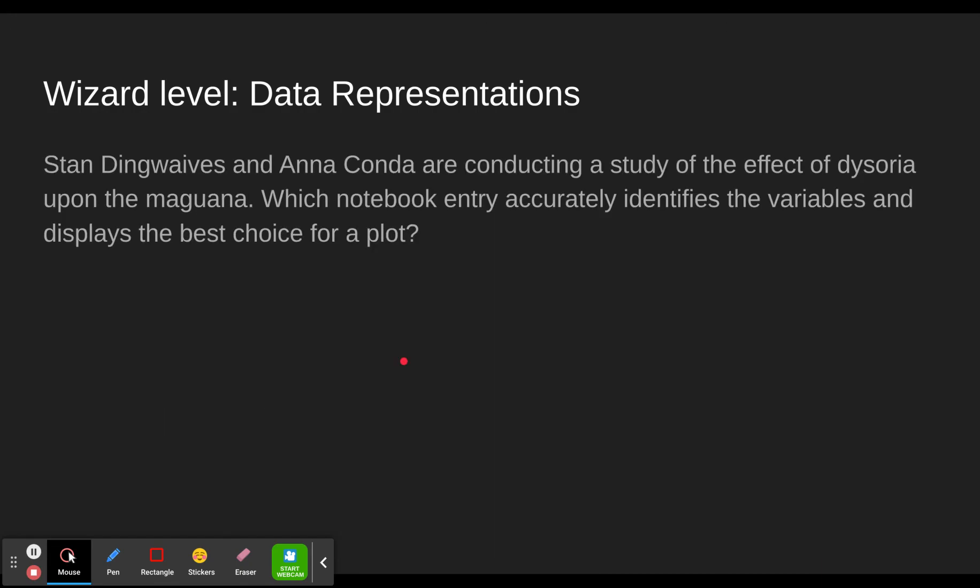Let's go through an example. So you'll see a little statement like this. Stan Dingwaves and Anna Conda are conducting a study of the effect of dysoria upon maguana, which notebook entry accurately identifies the variables and displays the best choice for a plot. So first of all, the effect of dysoria, this time dysoria is going to be our independent variable upon maguana. So here we have our independent. We're changing that and we're going to see how that affects the dependent.